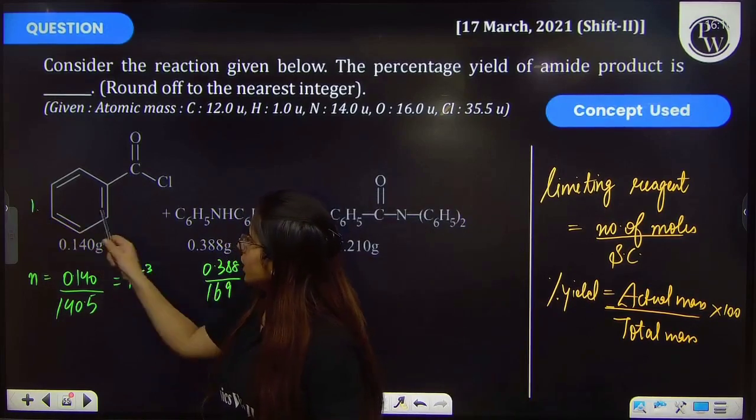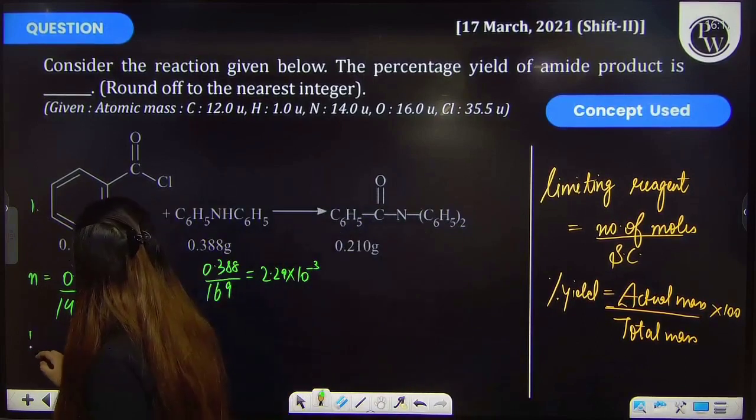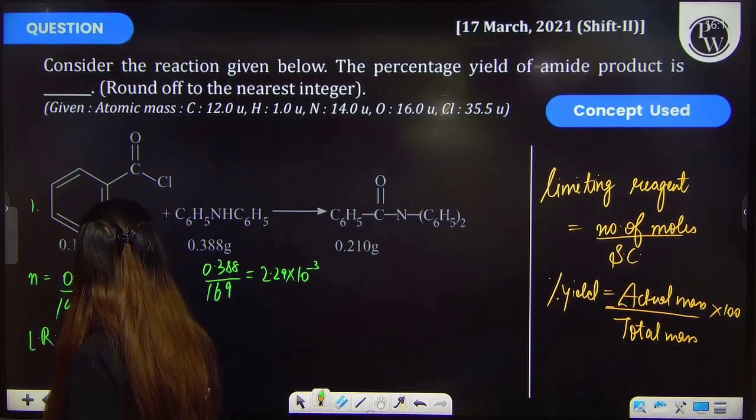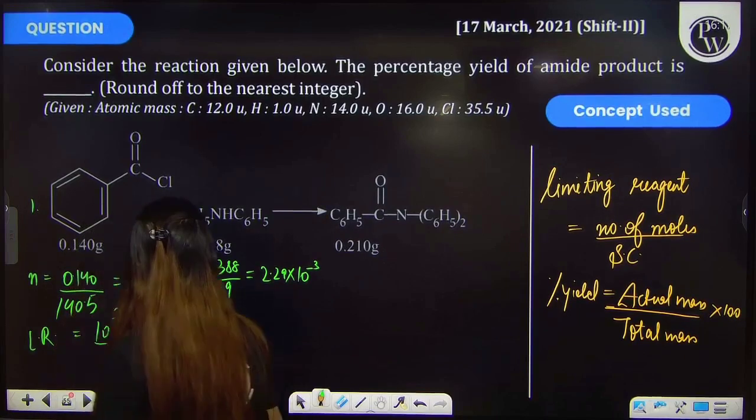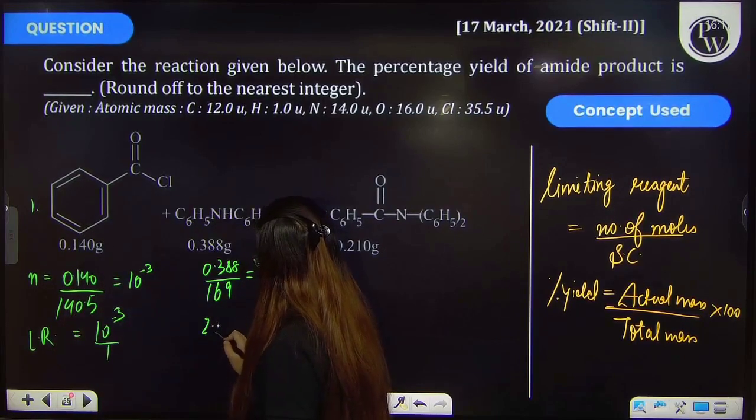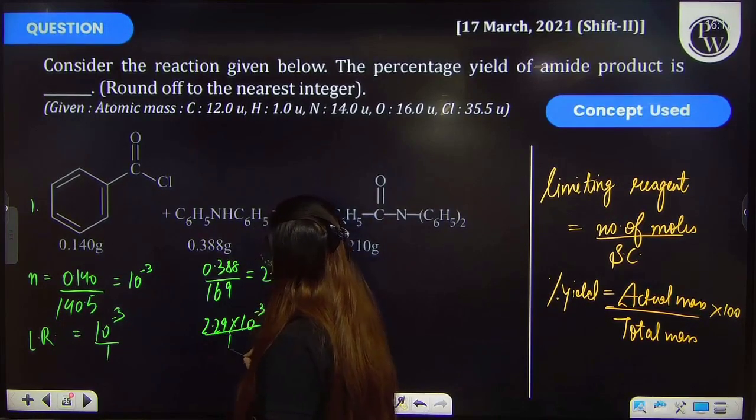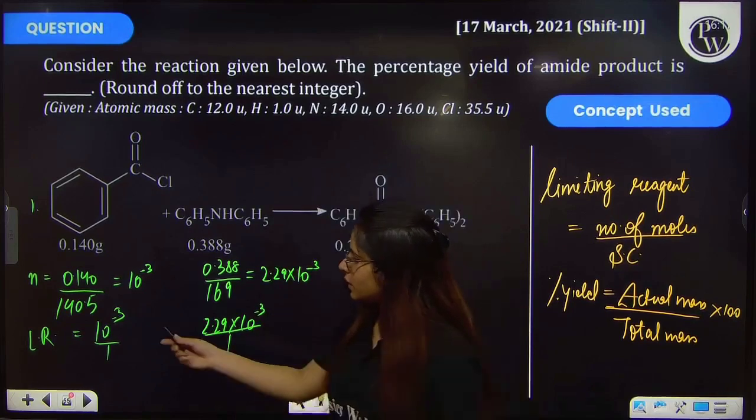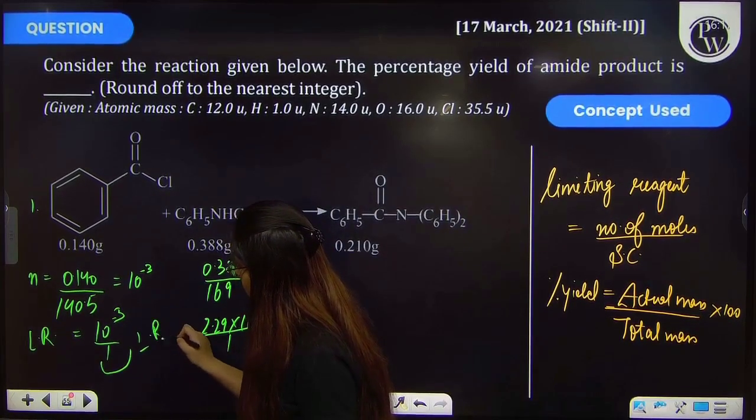Here also one and one stoichiometric coefficient. That means limiting reagent will be also for this 2.29 × 10^-3 divided by 1. Obviously, this is the lowest value. That means this is your limiting reagent.